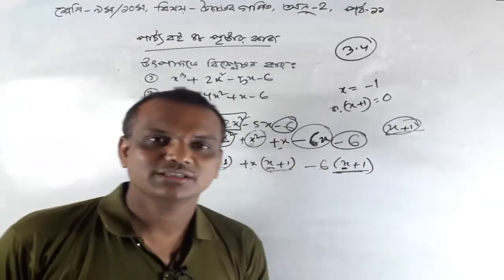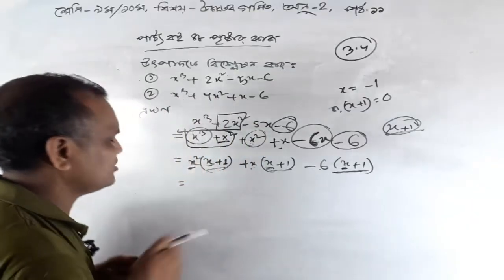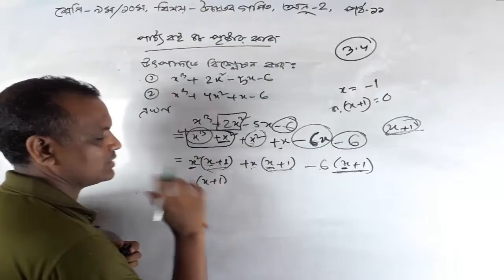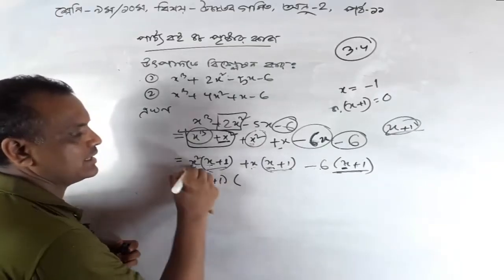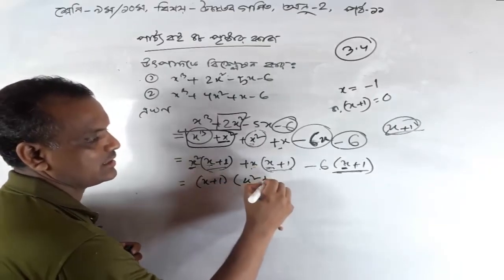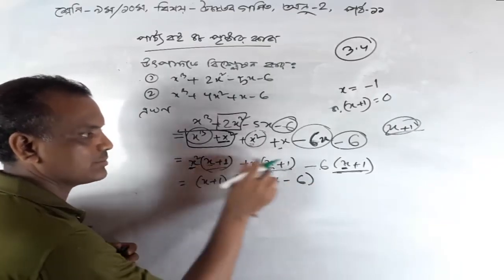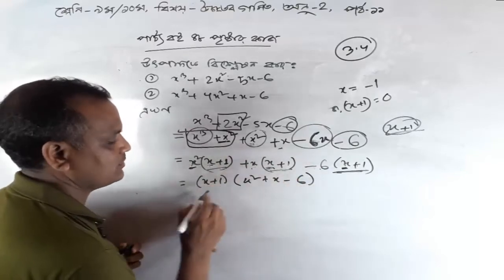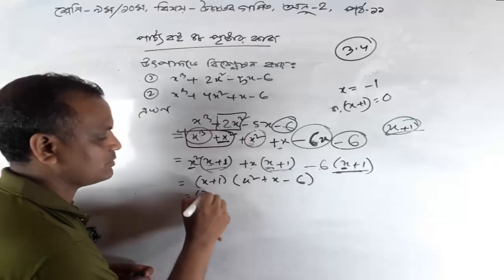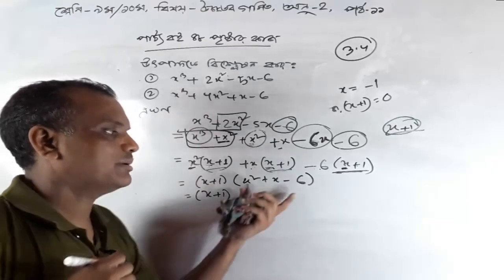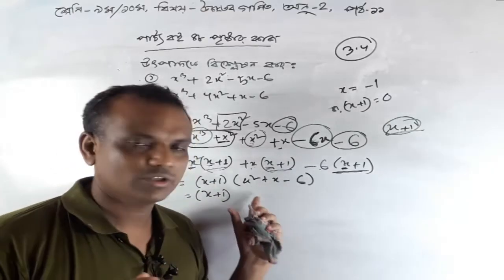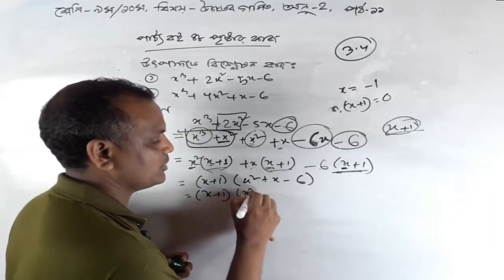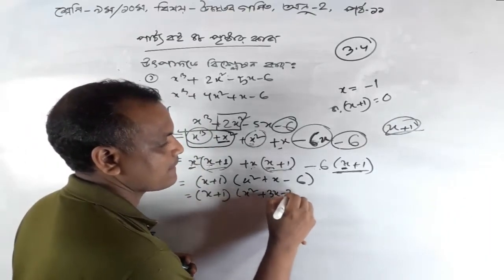If x was 4, I would write 4. Then x plus 1 is 0. x square, x square, x. I would write x squared plus x minus x. We will break the middle term and we will find the same thing.